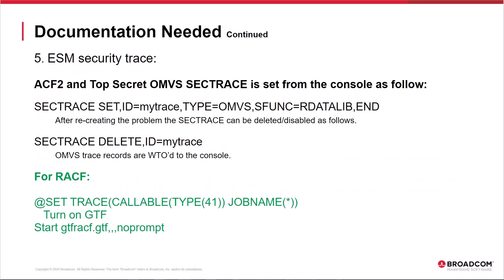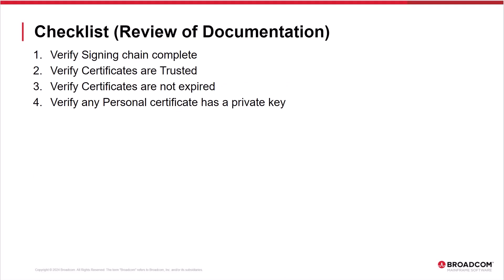The last piece of documentation needed is the ESM security trace. The trace is needed to verify that the key ring, cert auth certificates, and personal certificate are being returned, as well as the personal certificate's private key. Please note that the ESM security trace must be started prior to the server or client task starting, since the R_datalib calls to request the key ring and certificates are done during task initialization. If a client or server task is active, that task would need to be stopped, the ESM trace started, and then the task restarted. Both ACF2 and Top Secret use the SECTRACE operator command to trace R_datalib calls for key rings and certificates. Here are the RACF commands to turn on the GTF trace to trace R_datalib calls.